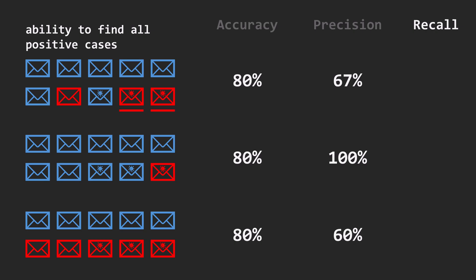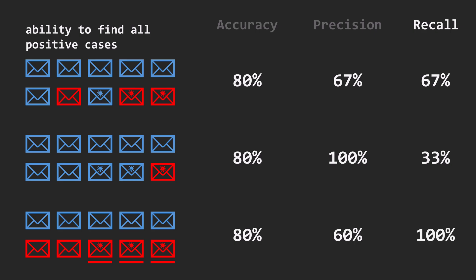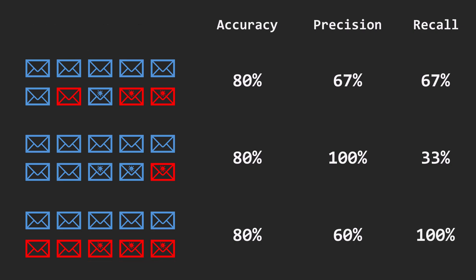The first model found 2 out of 3 positive elements, the second only 1, and the last model found them all. So, what do all these metrics tell us about model performance? Each model has the same accuracy, but they work differently in practice.